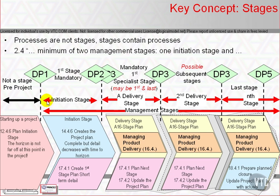PRINCE2 has seven processes, of which the first is Starting Up a Project, and it's freestanding on its own. All the other processes make up the content of stages, and a project always has at least two stages. Stages are management divisions of the project: the first of which creates the project plan and is the Initiation Stage, and all subsequent ones are delivery stages.